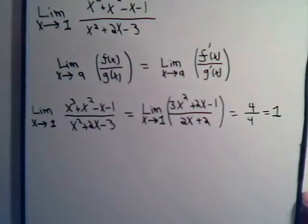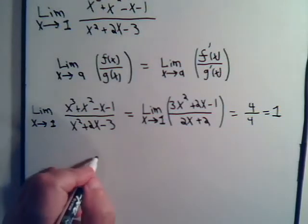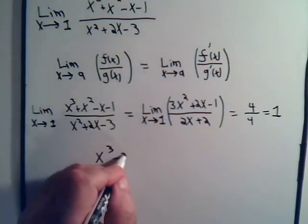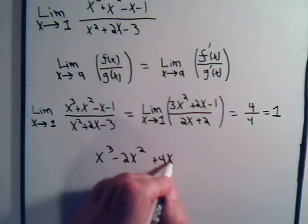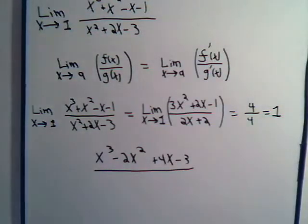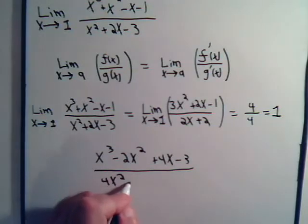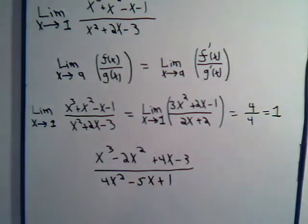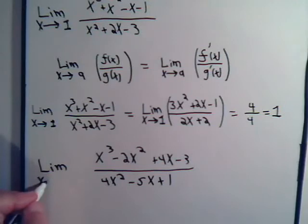Let's take another example. Suppose we have this, x cubed minus 2x squared plus 4x minus 3. And down here we have 4x squared minus 5x plus 1. And we're taking the limit again as x approaches 1.